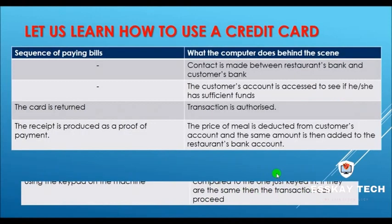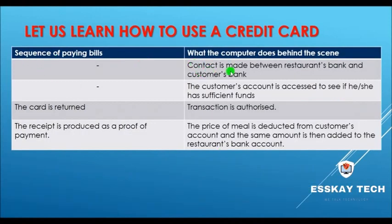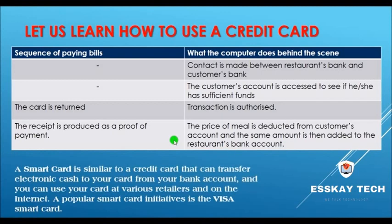The PIN is read from the chip on the card and compared to the one entered. If they match, the transaction can proceed. Contact is made between the restaurant's bank and the customer's bank. The customer's account is checked to see if there are sufficient funds. The card is returned, the transaction is authorized, and a receipt is produced as proof of payment.